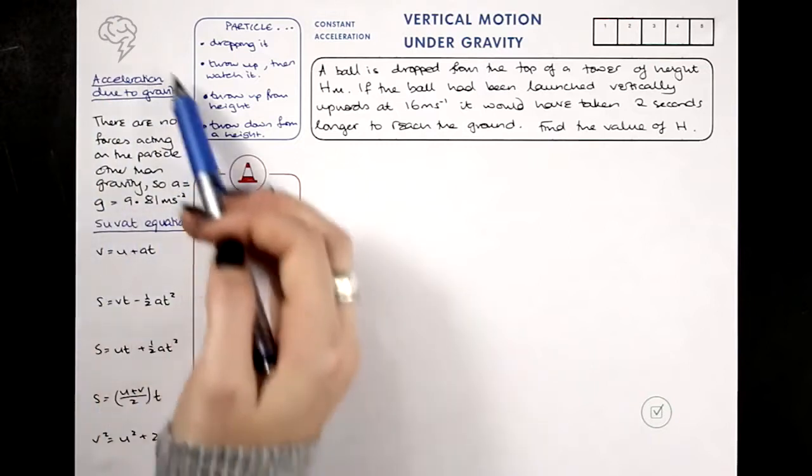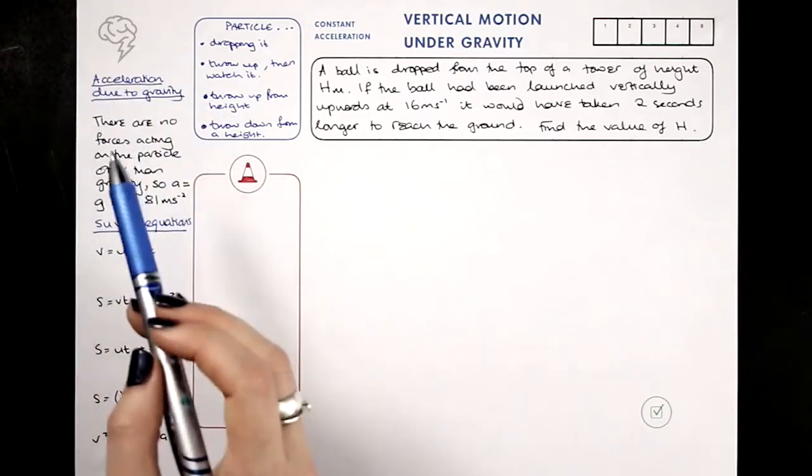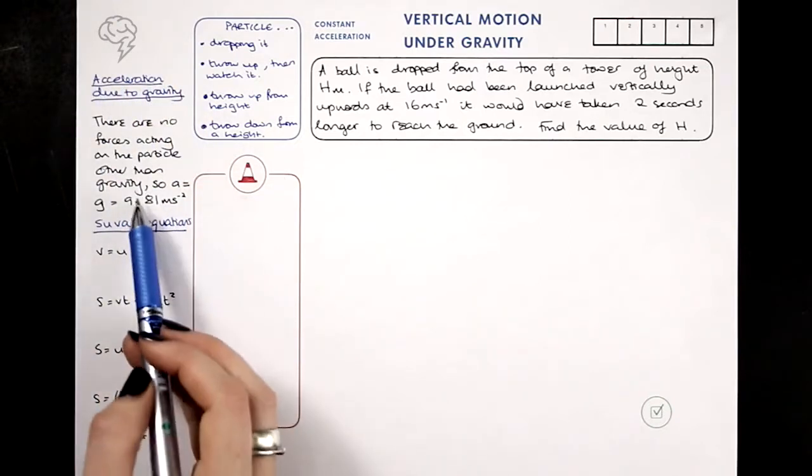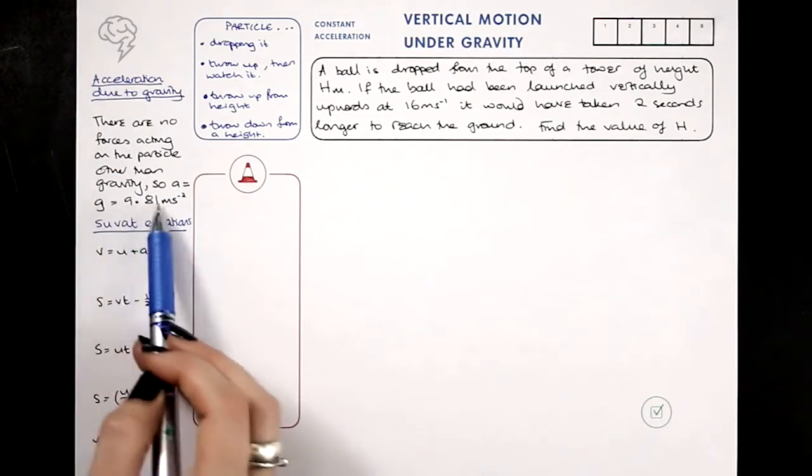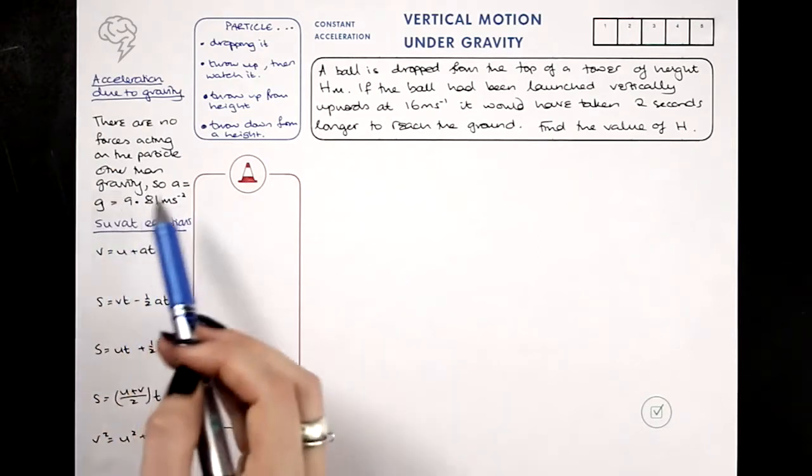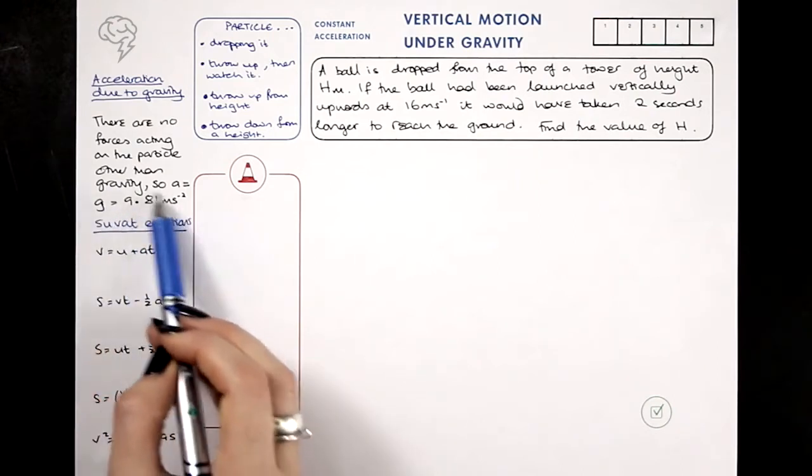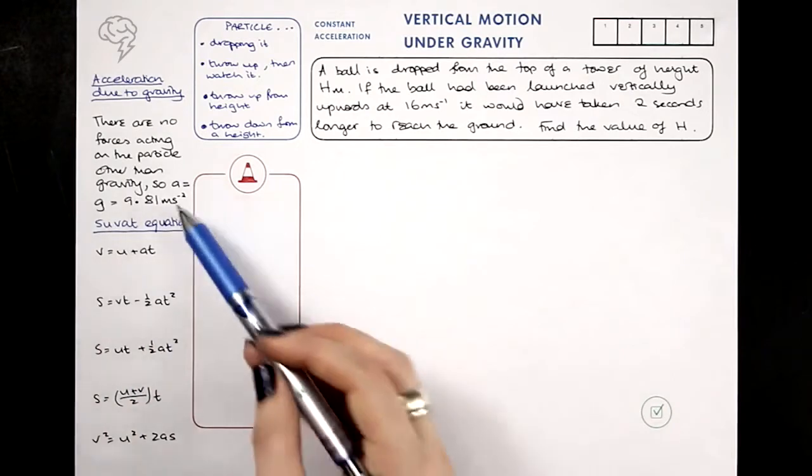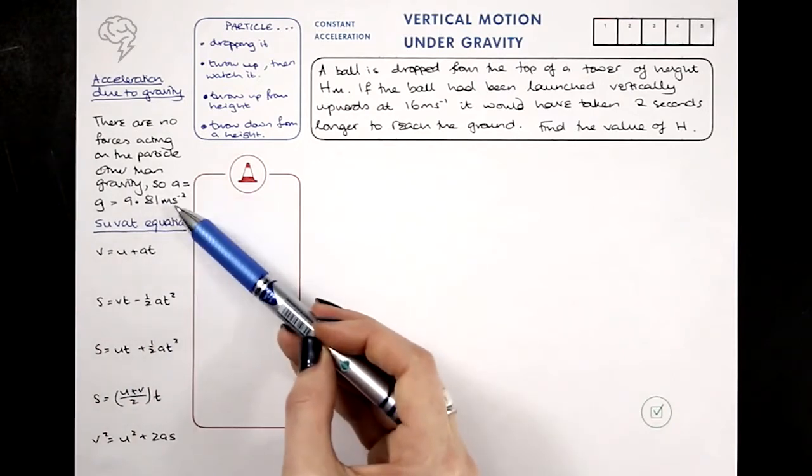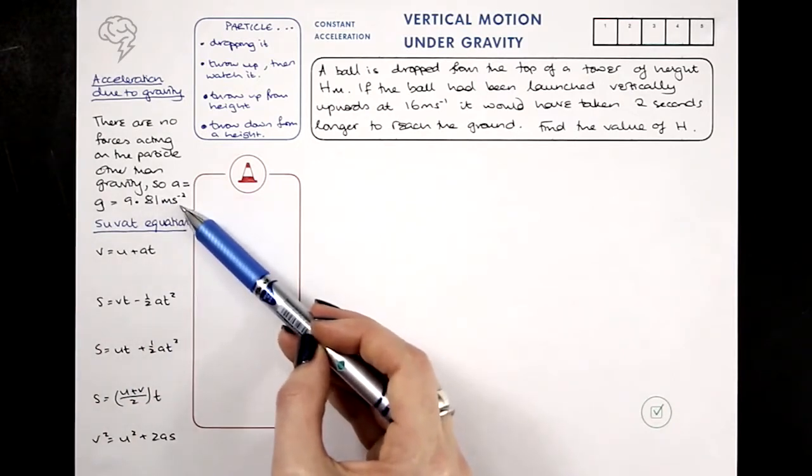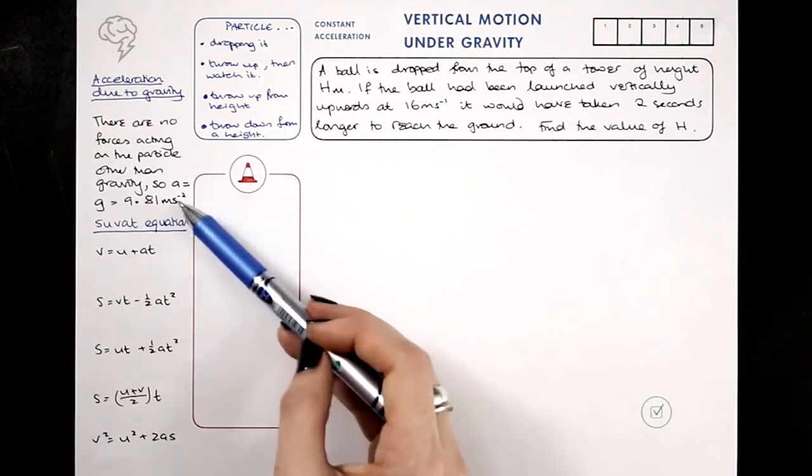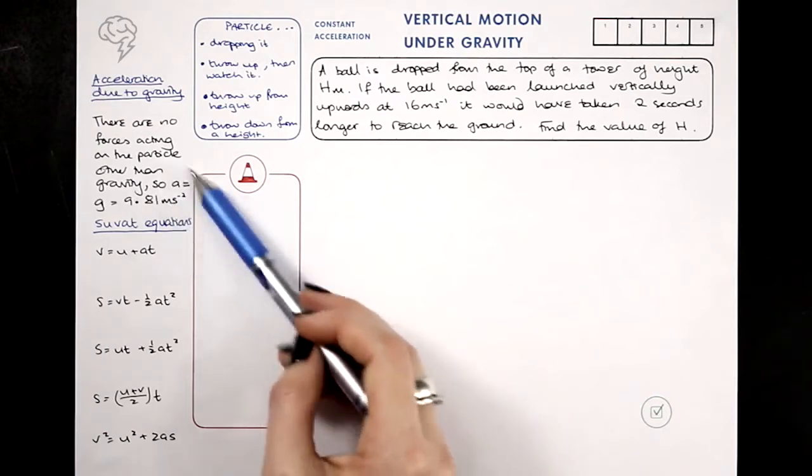Now this does assume two things, it assumes that gravity is constant on the surface of the Earth, which isn't strictly speaking true. The further away we are from the centre of the Earth, the smaller the effect of gravity is, so it's not strictly speaking true that if I climb to a tower, the gravity will be exactly the same, but we're using a modelling assumption that it is exactly the same, because it's similar enough not to affect the results of our calculations.